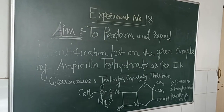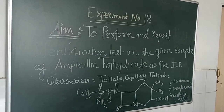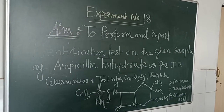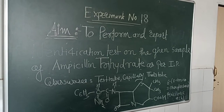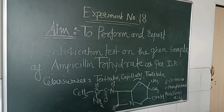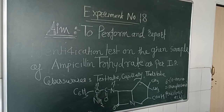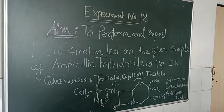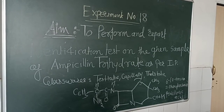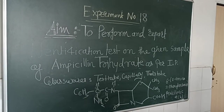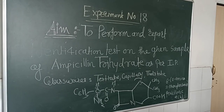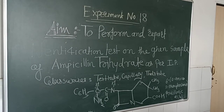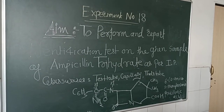Good afternoon one and all. Today we will see experiment number 18 of pharmaceutical chemistry 2. The aim of the experiment is to perform and report identification tests on the given sample of ampicillin trihydrate. This is a penicillin antibiotic as per Indian Pharmacopoeia.